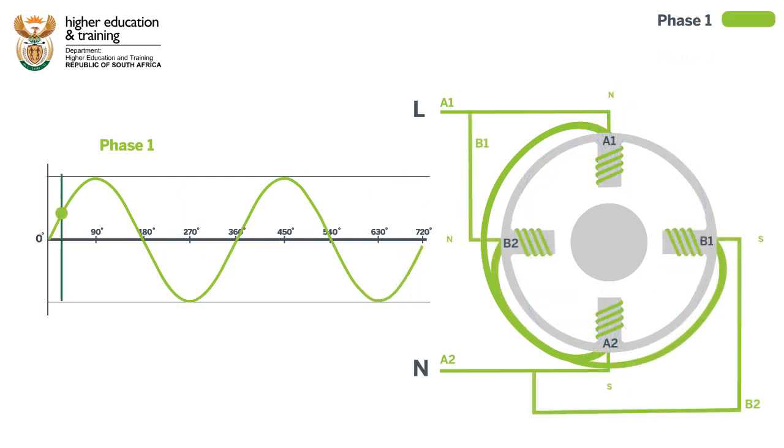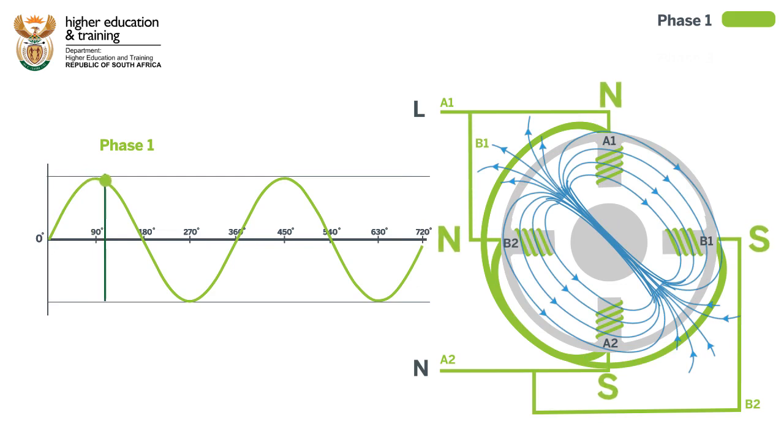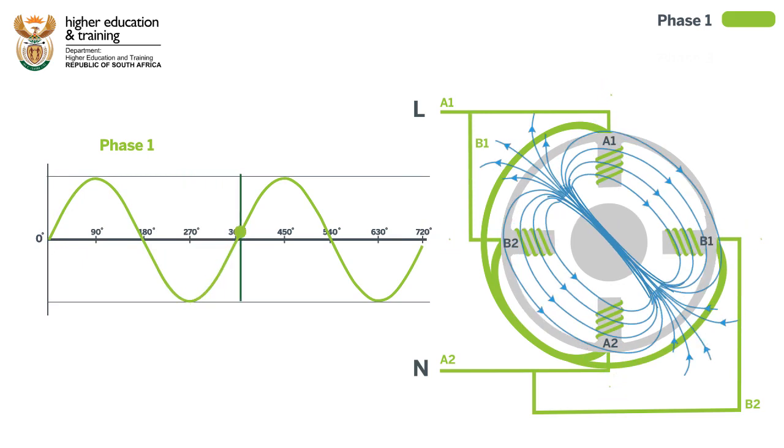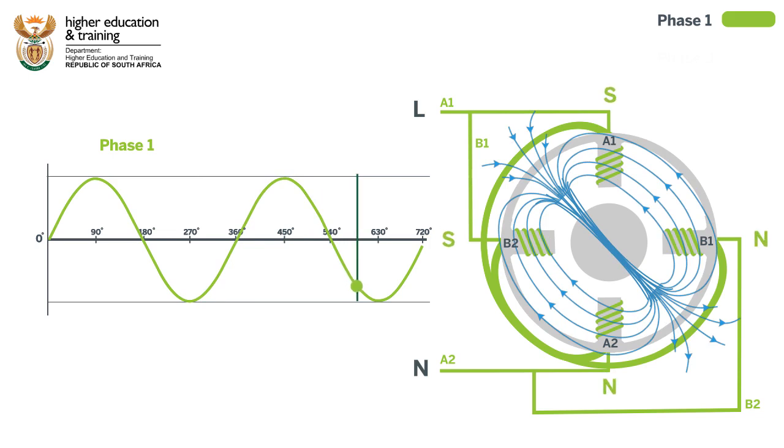Just adding an extra pair of windings at 90 degrees does not help because the current to these windings, and hence the polarity of the magnetic field created, is still in phase with the first pair of windings, and the polarity of the stator just keeps flipping back and forth.